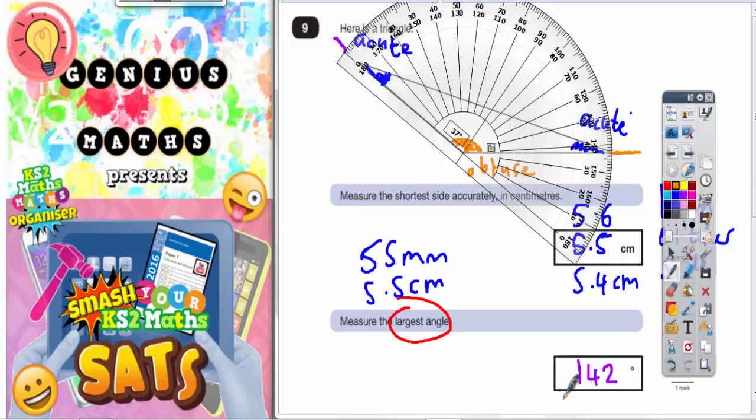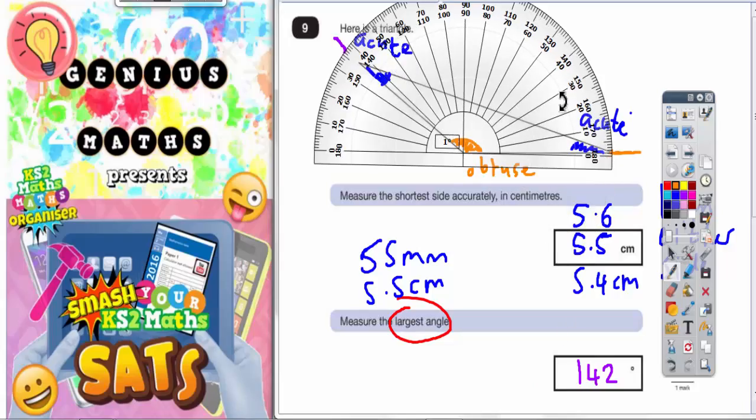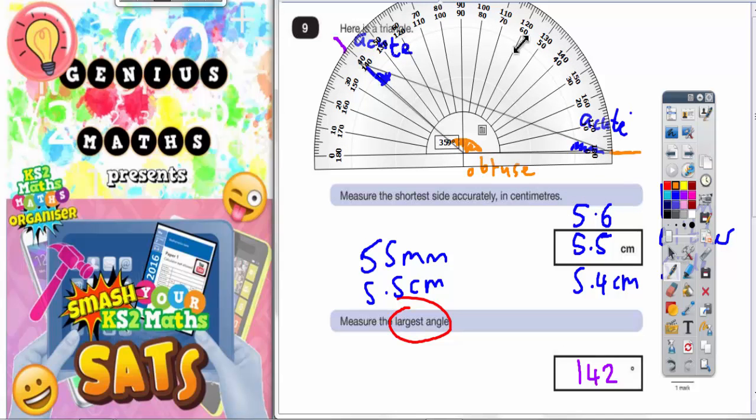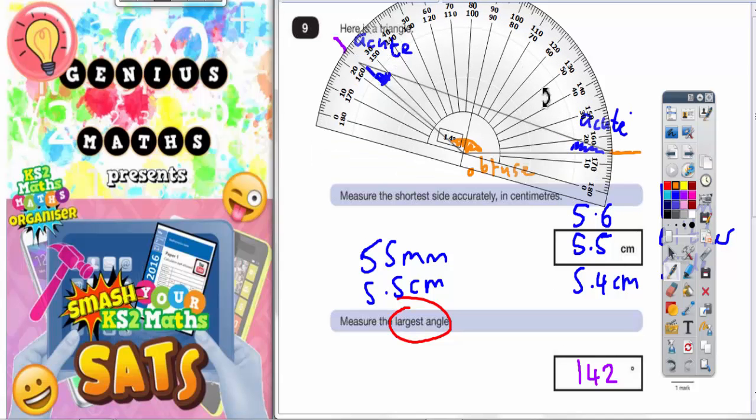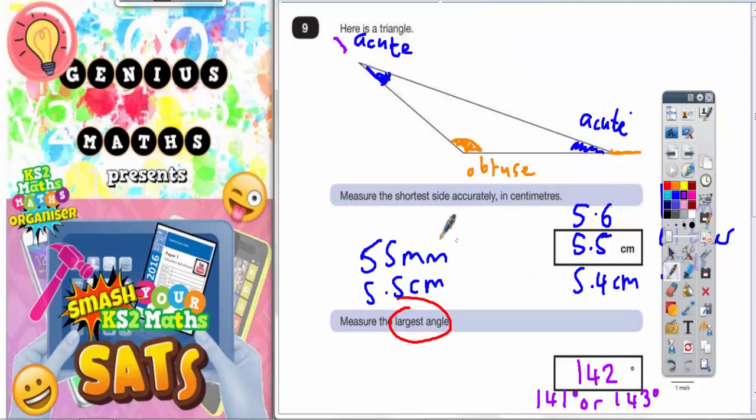Whichever zero you use—if you're using that zero you're counting now from zero on the inside scale of numbers, but if you have zero pointing up that line you're counting now using the outside scale of numbers. Whichever zero you use, you should still get the same answer of 142 degrees. Again, they'll allow you one degree either side, so 141 or 143 degrees will also be acceptable. But please, please, please be as accurate as you can.